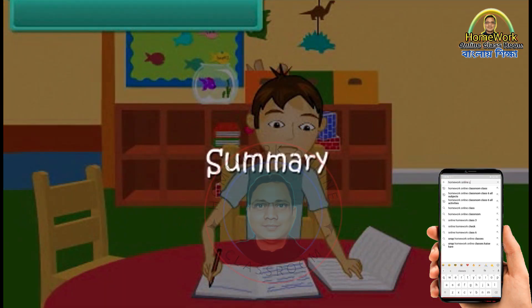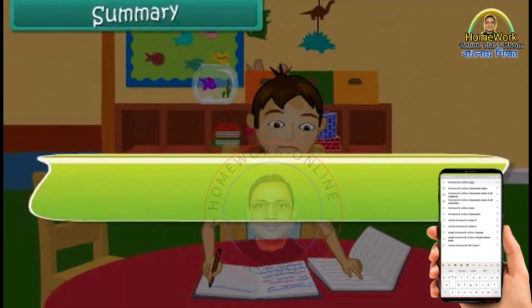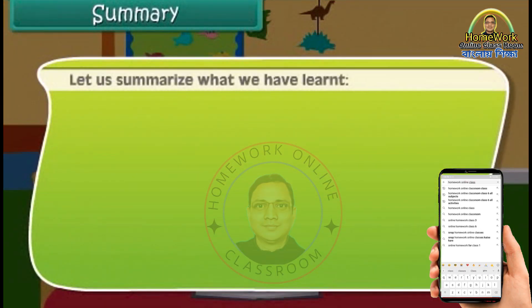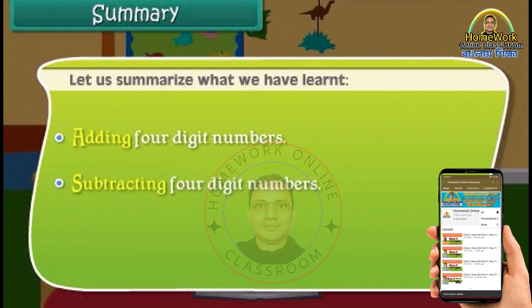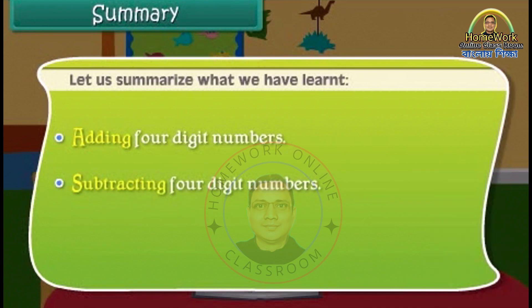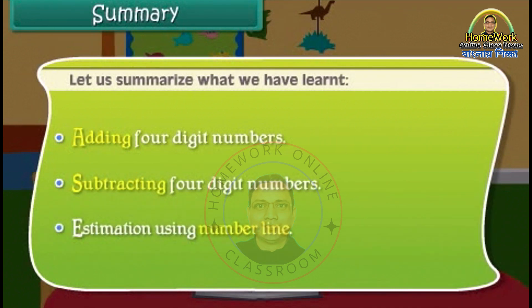Summary. Let us summarize what we have learnt: adding four-digit numbers, subtracting four-digit numbers, and estimation using the number line.